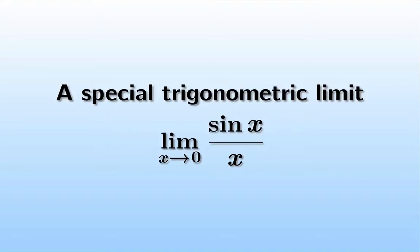The goal of this video is to explore a special trigonometric limit. This limit of sine x over x as x goes to zero is important for calculating the derivative of sine and cosine. So we're going to understand what this limit is and why.